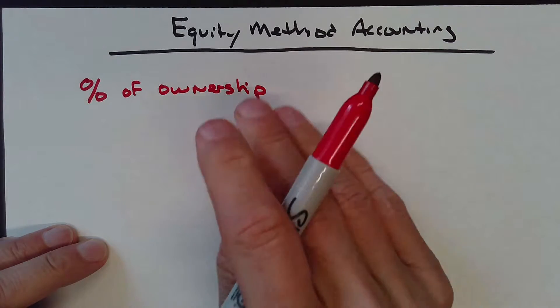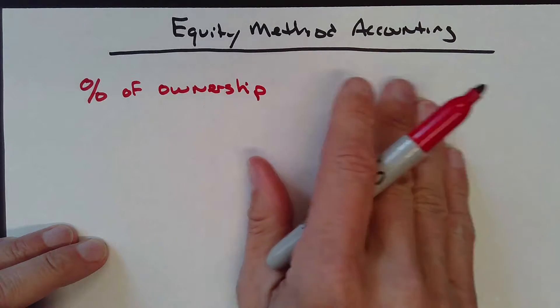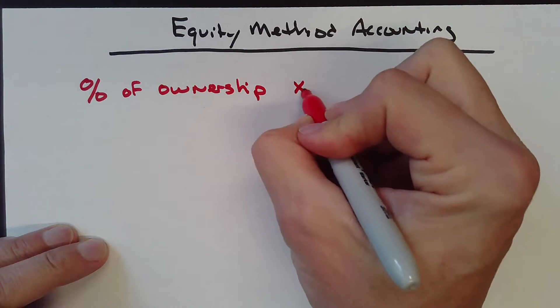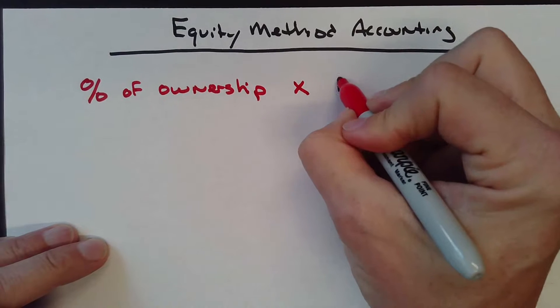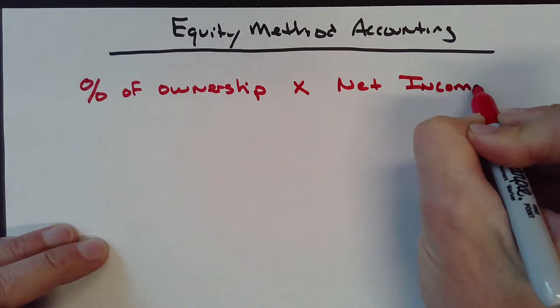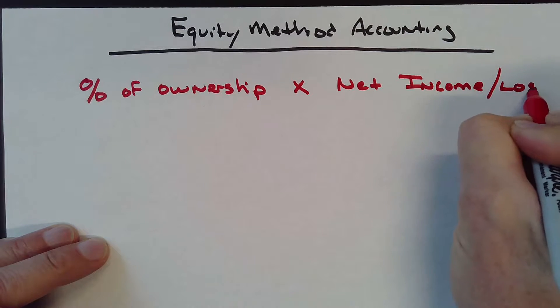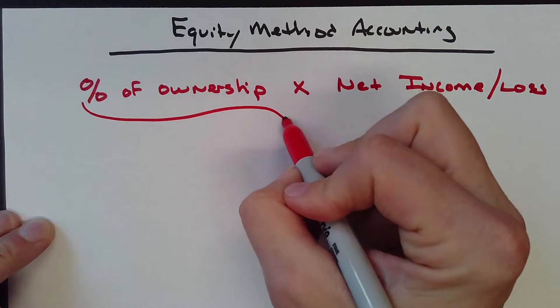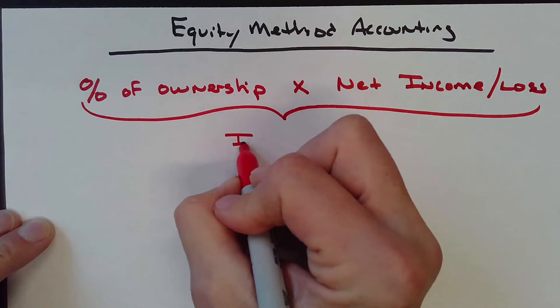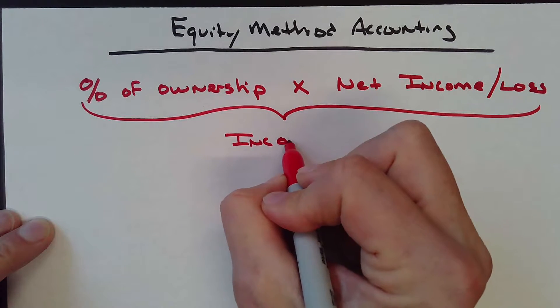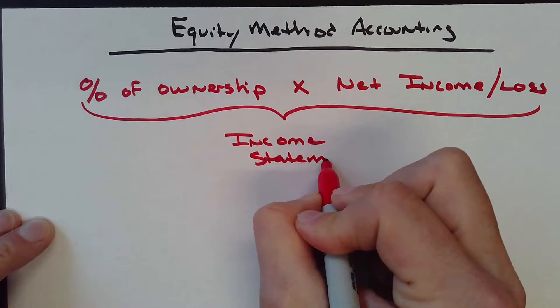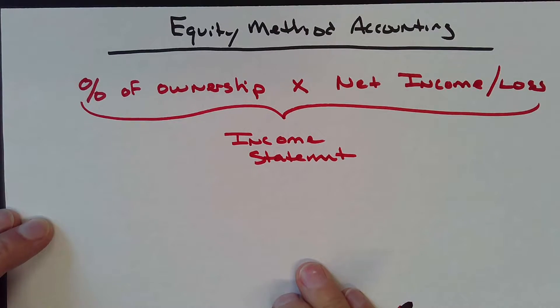I get their income statement, the company's income that I'm investing in. I take that percentage times their net income or loss and recognize it in my income statement.